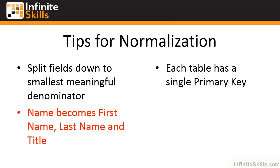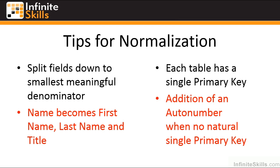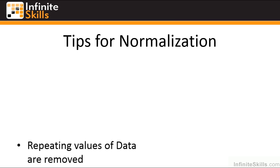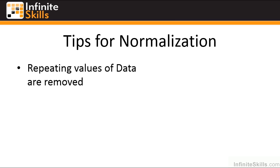Each table should have a single primary key where possible. You'll have seen that in our examples we've been adding an ID field and giving it the auto number data type, but that should only be used if there is no naturally occurring single primary key. We can also remove repeating values of data.